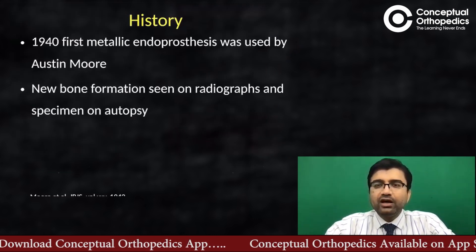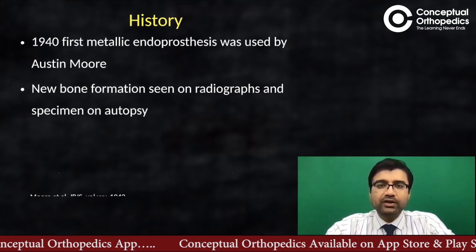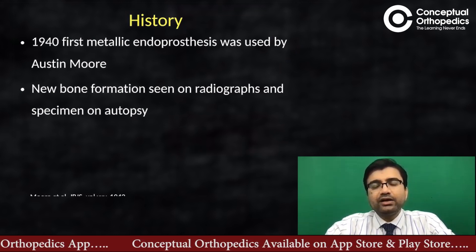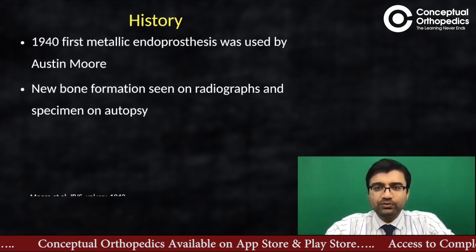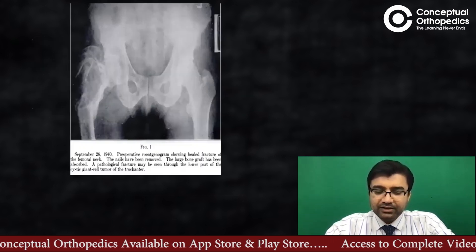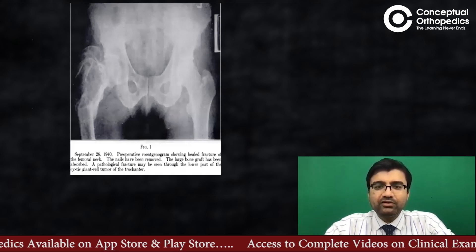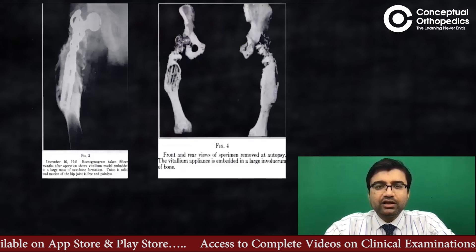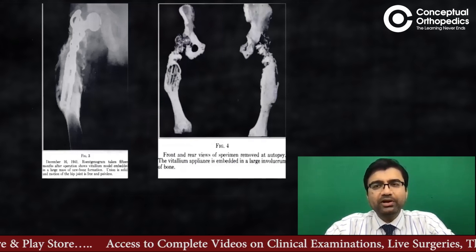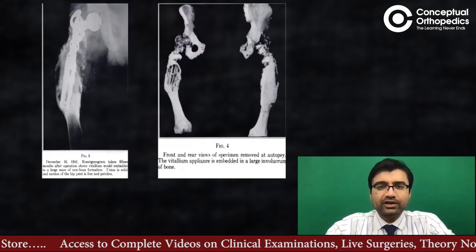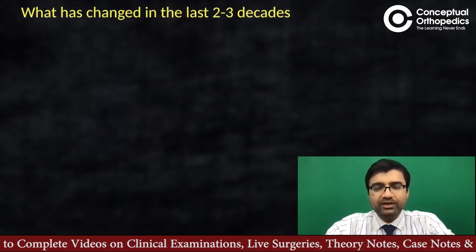Though we are becoming more familiar with these implants over the last two decades, if we look at the history, in the 1940s the first endoprosthetic was used by Austin Moore. Pictures are available on the internet from the 1940s where this implant was used for a bony lesion. It was probably one of the most primitive forms, and nowadays we have seen a lot of new developments.